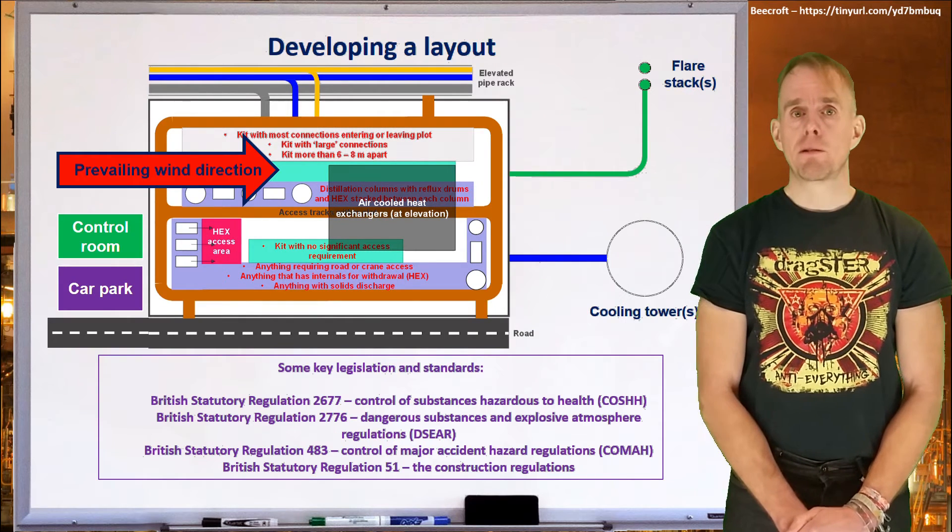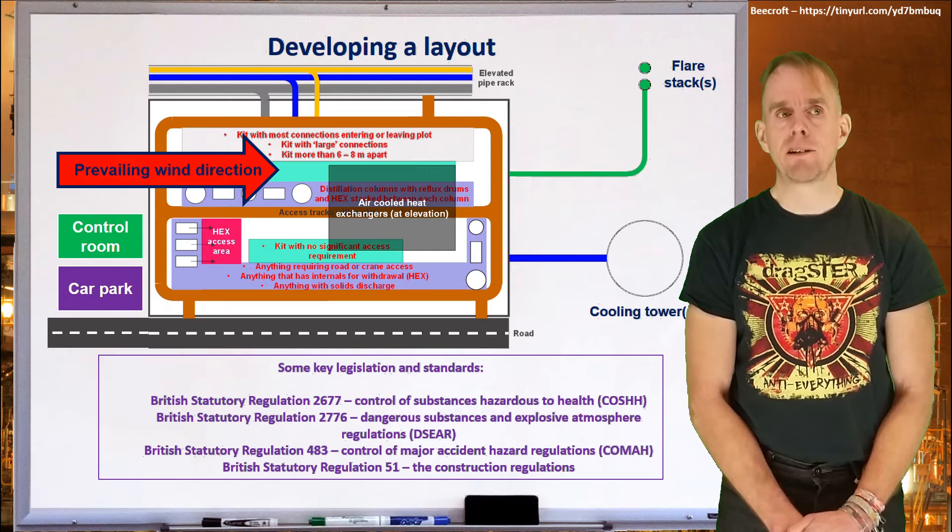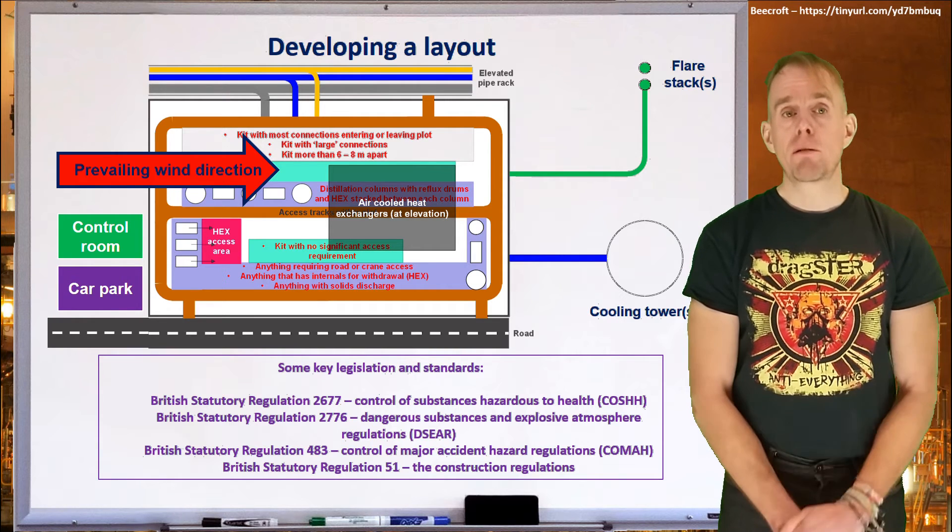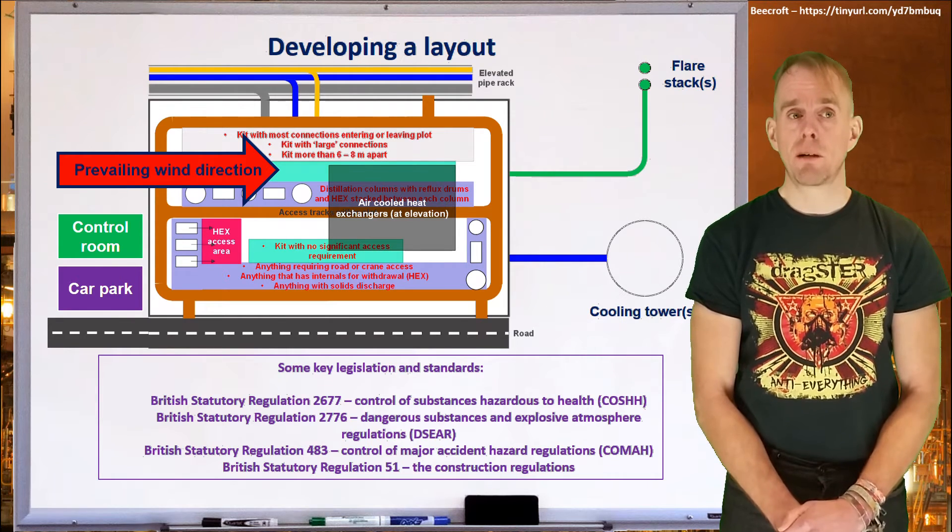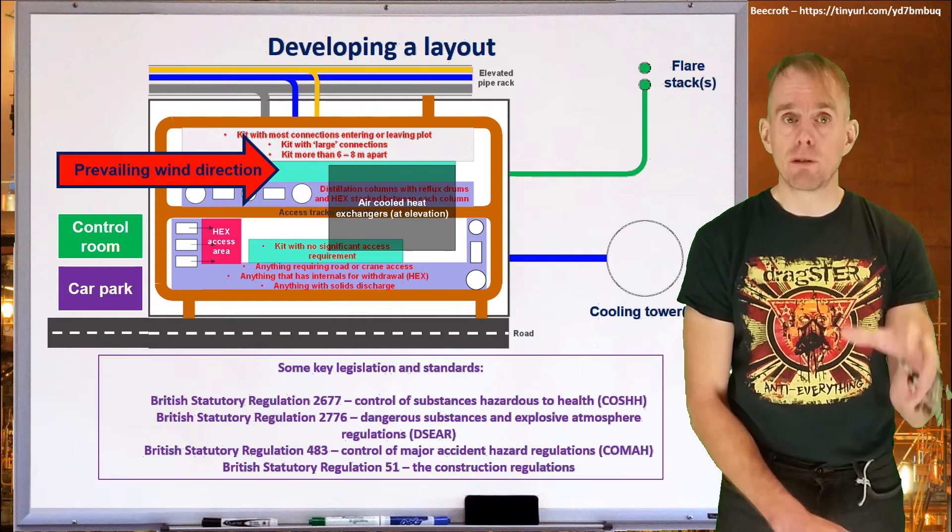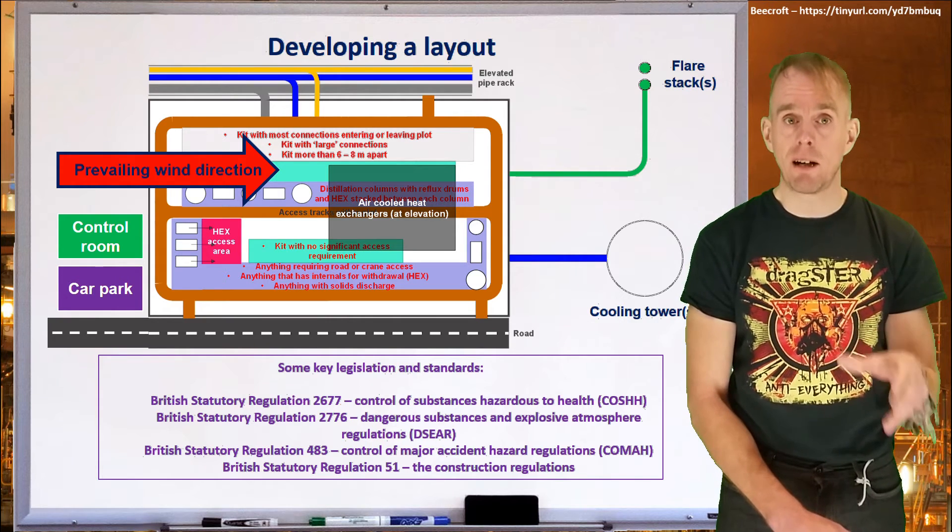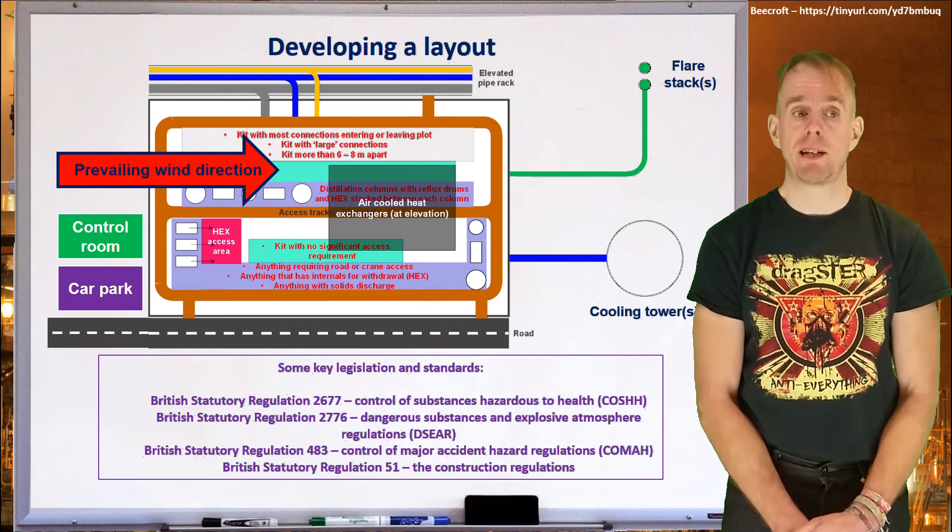Now we need to think about some of the finishing points. Where are you going to put your control room? Where are you going to get people in and out of your plot? Consider the prevailing wind direction. Put your control room upwind of your plant. Put your car parks upwind of your plant, so that if anything goes wrong on your plant, those critical areas where people are, where people will be escaping from, are generally not going to be affected.